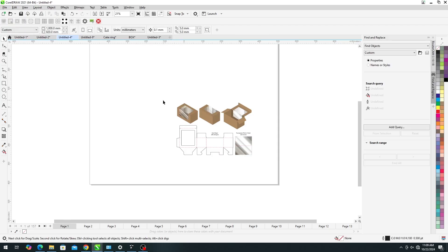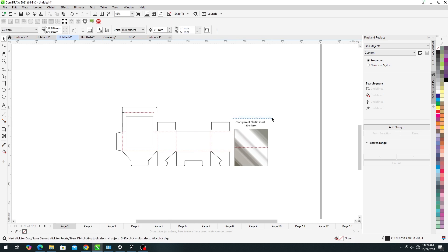In Coral Draw, we open the design and delete everything but the design itself. And we're going to be starting with cardboard, so we can delete the transparency as well for now.